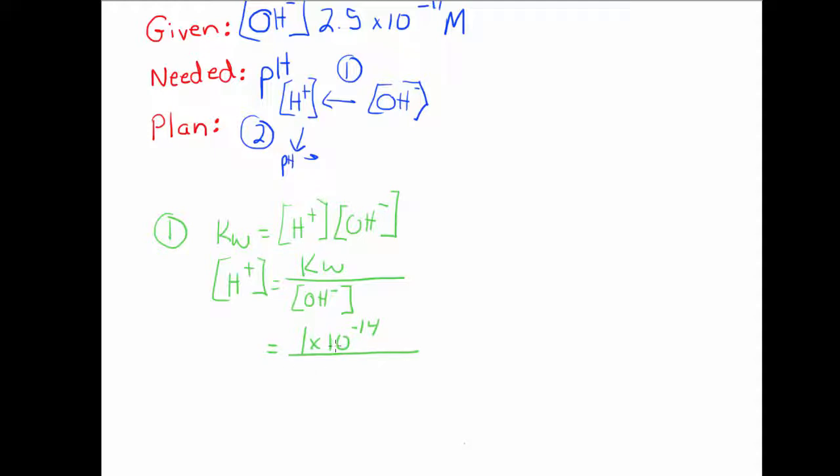Remember that Kw is 1 times 10 to the negative 14, and we were given the hydroxide ion concentration in the question. Both of these are molarity, so moles per liter. When I do that calculation, I get 0.0004. That's the concentration of the hydronium ion.